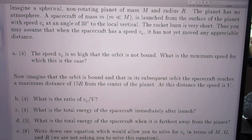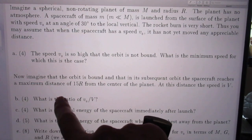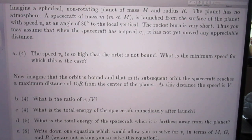Now imagine that the orbit is bound and that in its subsequent orbit, the spacecraft reaches a maximum distance of 15 capital R from the center of the planet. At this distance, the speed is capital V. Question B. What is the ratio of V0 over capital V?